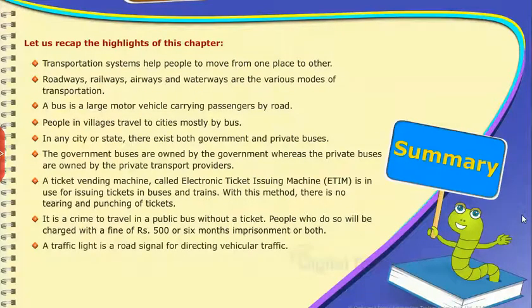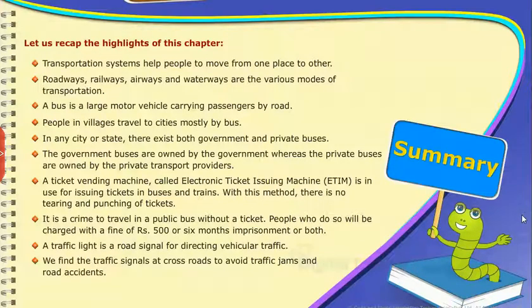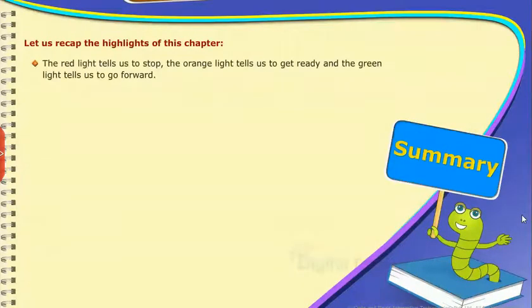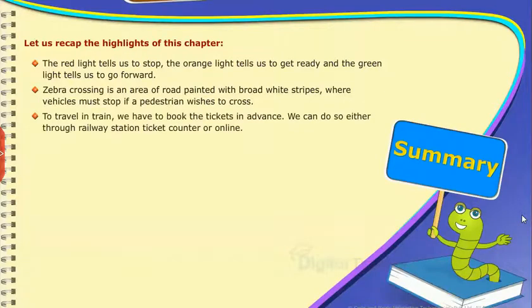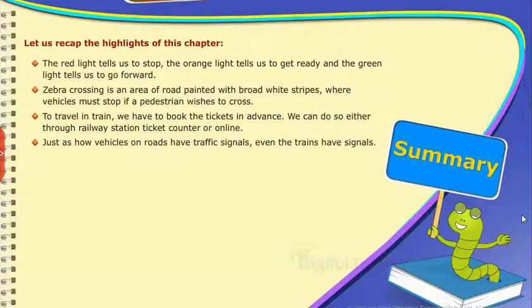A traffic light is a road signal for directing vehicular traffic. Traffic signals at crossroads help avoid traffic jams and road accidents. The red light tells us to stop, the orange light tells us to get ready, and the green light tells us to go forward. Zebra crossing is an area of road painted with broad white stripes where vehicles must stop if a pedestrian wishes to cross. To travel by train, we have to book tickets in advance — either through the railway station ticket counter or online. Just as vehicles on road have traffic signals, trains also have signals.